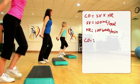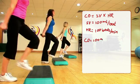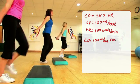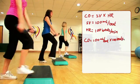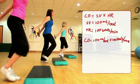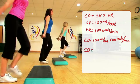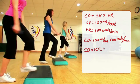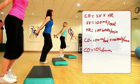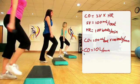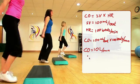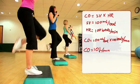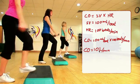Cardiac output equals 100 milliliters per beat times 100 beats per minute, giving us a cardiac output of 10 liters per minute. By doing a little bit of exercise, we've almost doubled the cardiac output — your blood is being pumped throughout your body twice in that minute with moderate exercise.